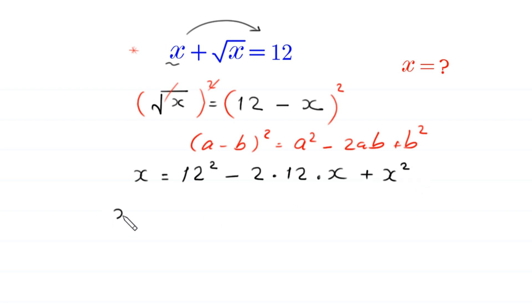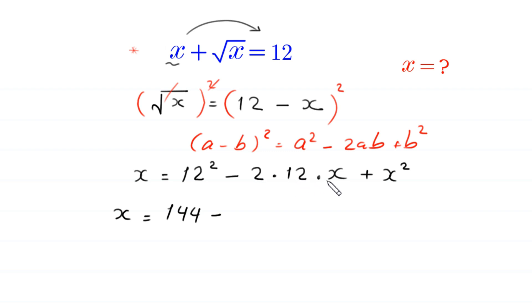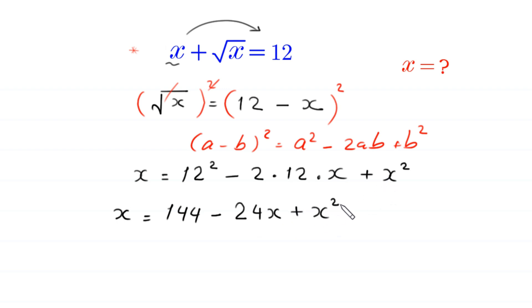Next, x is equal to 12 squared, which is 144, minus 2 times 12 — that is 24 — times x, giving 24x, plus x squared.